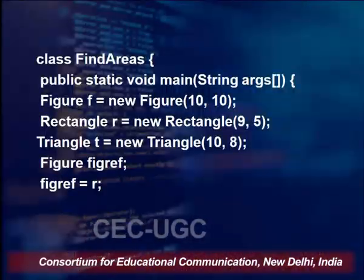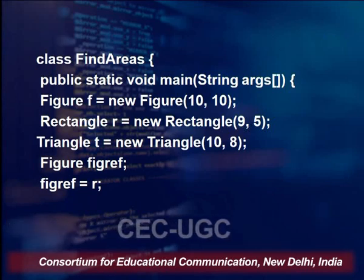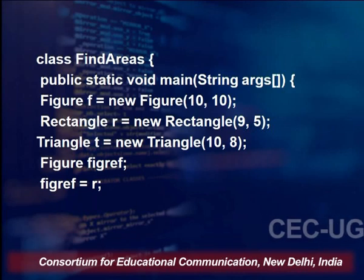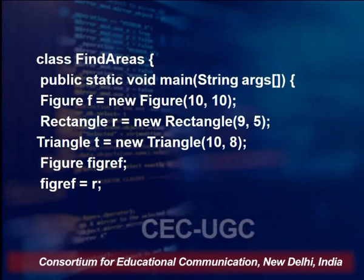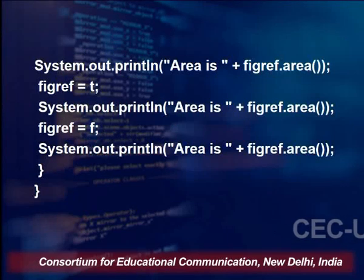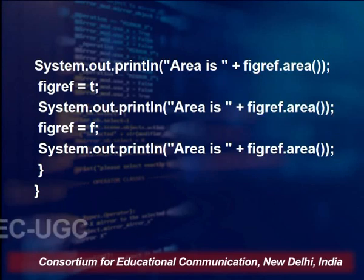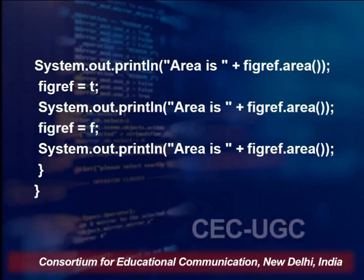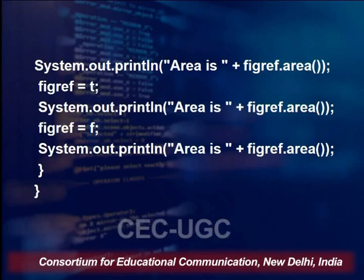We assign the reference variable r of the rectangle class into figRef, so figRef = r, meaning figRef is now pointing to r. With this figRef we call the area method. In the next line, figRef stores the reference variable t belonging to class Triangle, and again we call figRef.area().